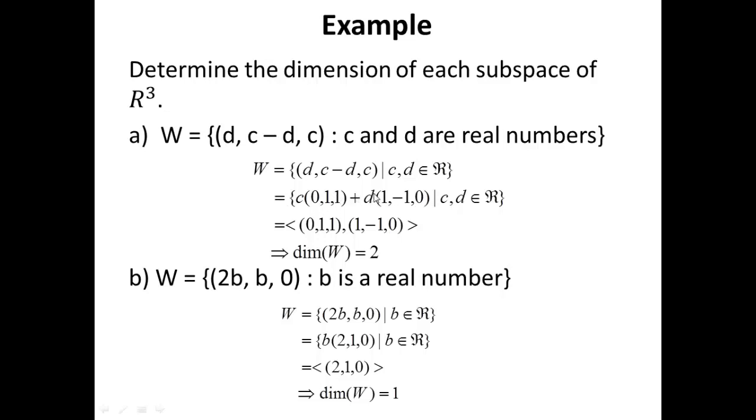That simply means that W is generated by these two vectors. Remember this definition right here? This is the span, the set of all linear combinations of these two vectors produces my W. We can also write this in this form. That means (0,1,1), (1,-1,0) span W. I.e. the dimension of my subspace W is 2.